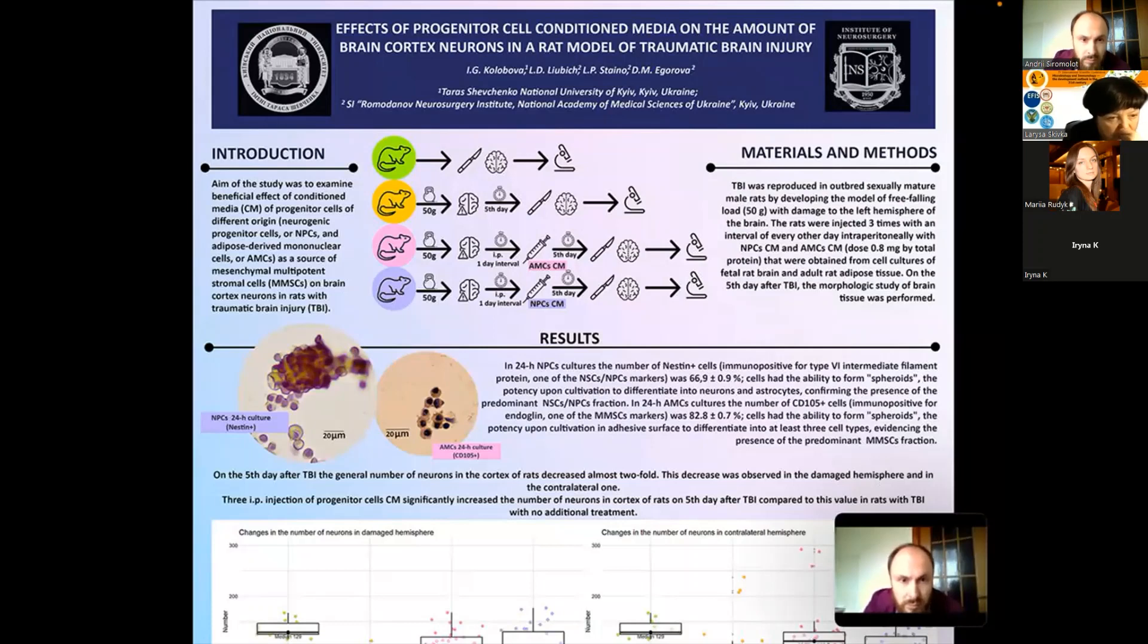And today I'd like to focus specifically on the effects of conditioned media of progenitor cells of different origins, such as neurogenic progenitor cells and adipose-derived mononuclear cells, as a source of mesenchymal multipotent stromal cells on the brain cortex neurons in rats.